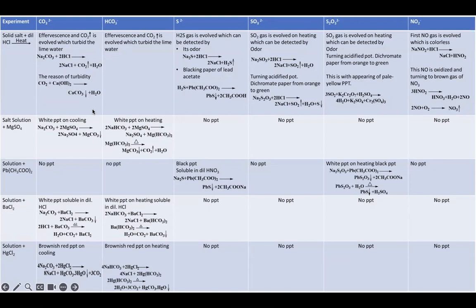Let us start with the first group, the dilute HCl group. There are six anions. If we take carbonate and bicarbonate, both give effervescence of carbon dioxide, which means we need one more experiment to differentiate between them. Remember: take the salt — the anion — as a solid in a small amount, then add dilute HCl. Pay very strong attention to what happens immediately when you add dilute HCl, because what you see immediately is very important to differentiate between the six anions.